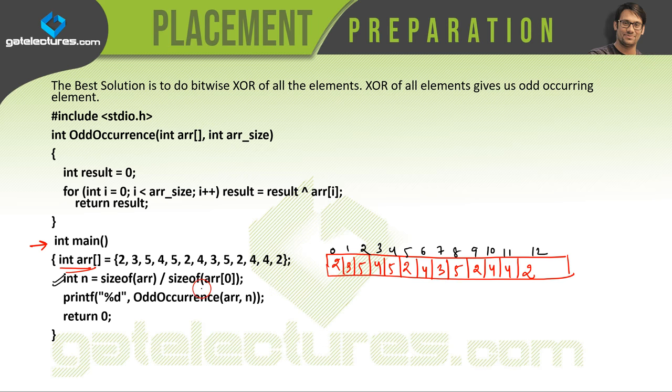Next is we are finding out the size of the array. Size of this array divided by size of any index location 0, this is going to tell what is the total number of elements inside this array. We have already seen that in our programming videos how this statement is working.